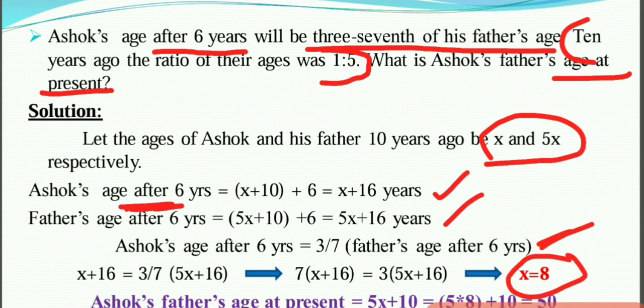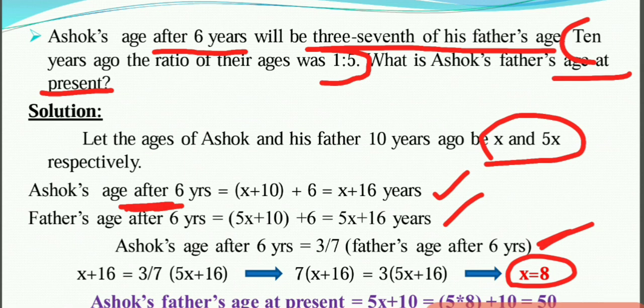Setting up the equation: Ashok's age after 6 years equals 3/7 of father's age after 6 years, so x plus 16 equals 3/7 times (5x plus 16). Solving gives x equals 8. Father's present age is 5x plus 10, substituting x equals 8: 5 times 8 plus 10 equals 40 plus 10, which is 50. Ashok's father's present age is 50.